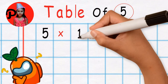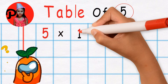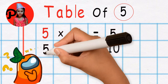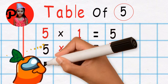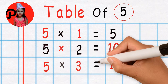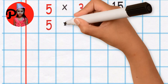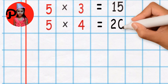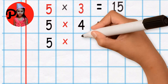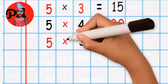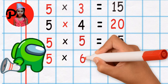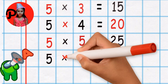Five ones are five. Five twos are ten. Five threes are fifteen. Five fours are twenty. Five fives are twenty-five. Five sixes are thirty.